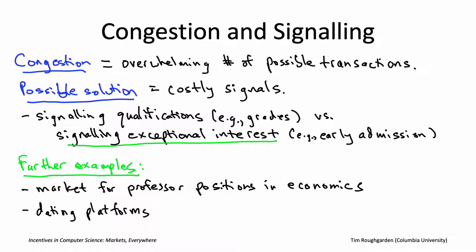The company gave the researchers amazingly rich information — all the relevant data about users, including a score computed internally about how desirable each user was. This provided a measure of how effective the rose signals were by comparing the probability of a message reply with and without a rose, controlled for the desirability score of both parties. On that basis, they concluded that the use of roses was good: it increased the probability of message acceptance, and it also increased overall user engagement, with more messages flowing across the platform.